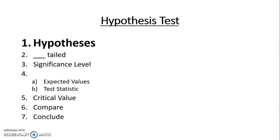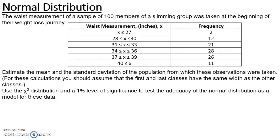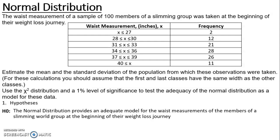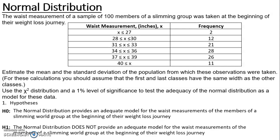Starting with our hypothesis. Our null hypothesis is always that nothing has changed or is different. So for this example H0 is that the normal distribution does provide an adequate model for the waist measurements of members of a slimming group. Our H1 is therefore that the normal distribution does not provide an adequate model for the waist measurements of the members of the slimming group.